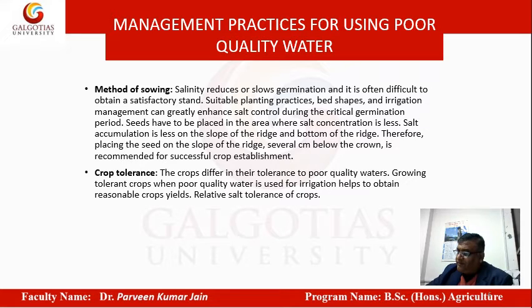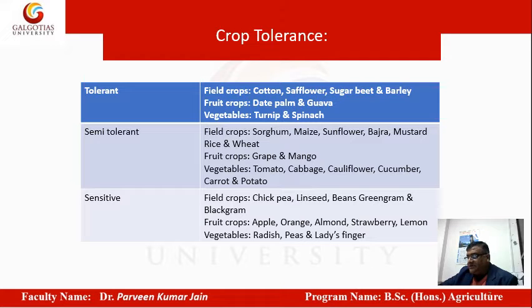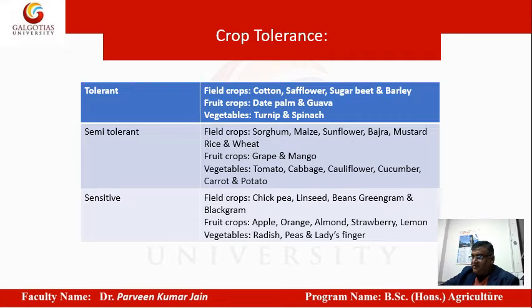Crops differ in their tolerance to poor quality waters. Semi-tolerant crops include sorghum, maize, sunflower, mustard, rice, wheat, and vegetables like tomato, cabbage, cauliflower, cucumber, carrot, and potato. Sensitive crops include chickpea, linseed, beans, green gram, and fruits like apple, orange, and almond. These sensitive crops should not be grown using poor quality water.